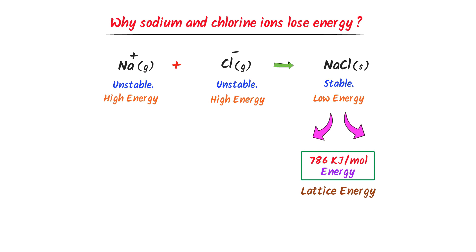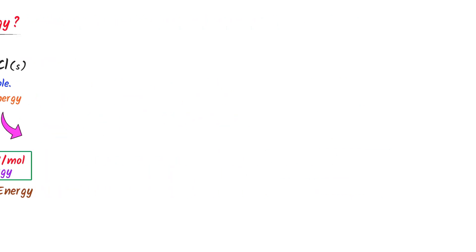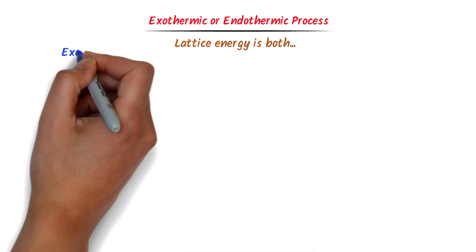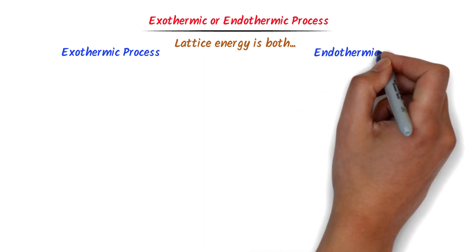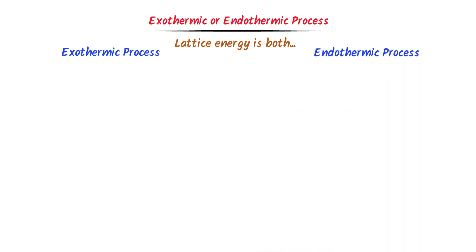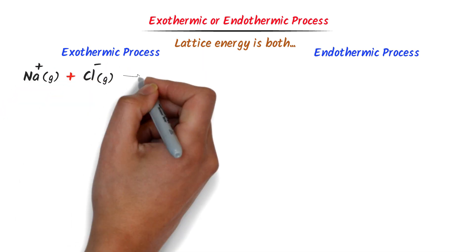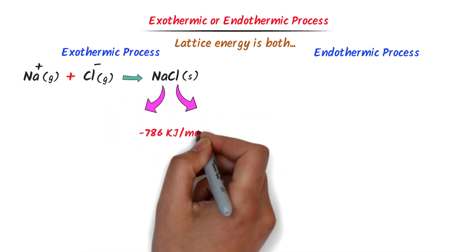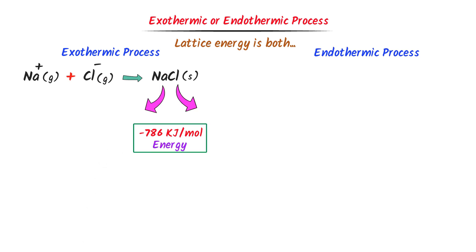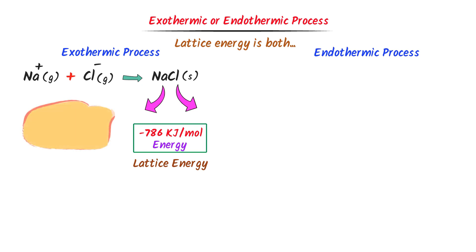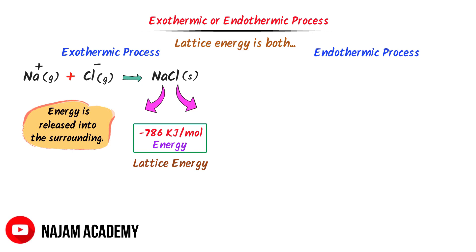Now let me teach you one important question which a lot of students miss: Is lattice energy an endothermic or exothermic process? The simple answer is both. We have already learned that when gaseous sodium ions react with gaseous chlorine ions to form one mole of sodium chloride, they release minus 786 kilojoules per mole of energy. This energy is called lattice energy. In this case, energy is released into the surrounding, so we say lattice energy is an exothermic process.